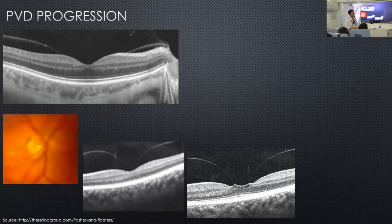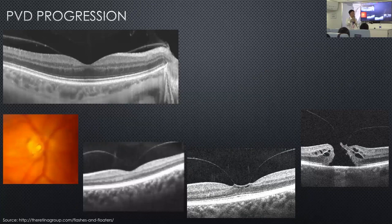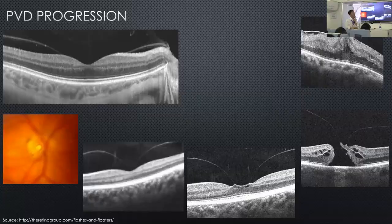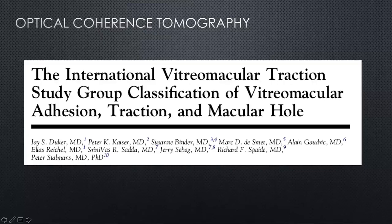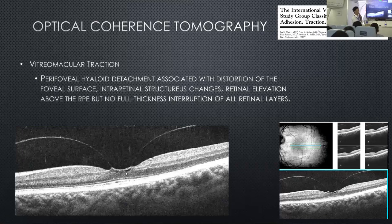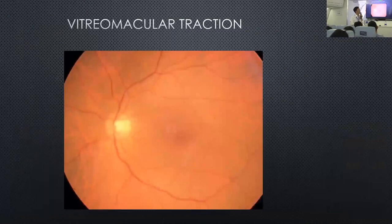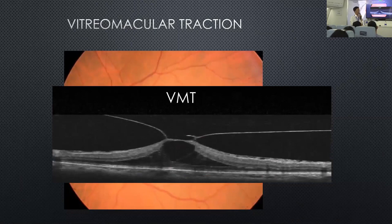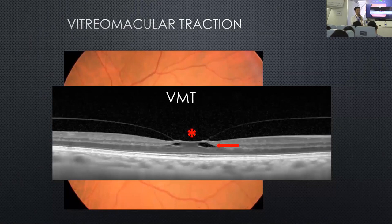You can actually follow sequentially how vitreous macular tractions can cause a macular hole. Traction is when there are structural changes in the retina, and the traction can cause splitting of the retinal layer depending on how severe it is.